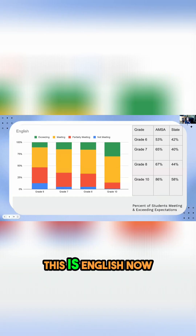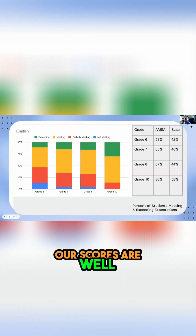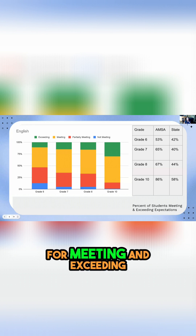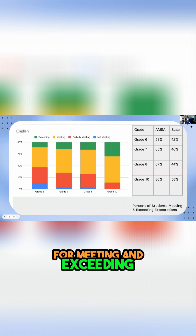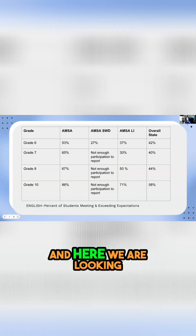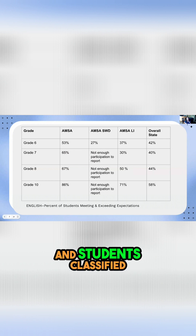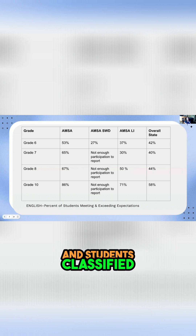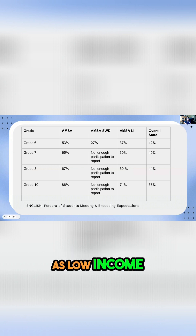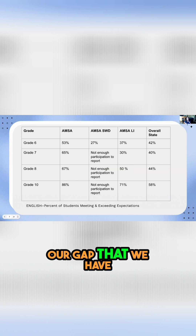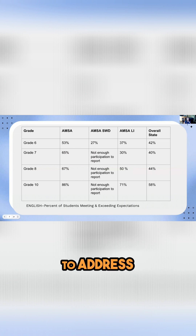This is English now. Again, our scores are well above the state level for meeting and exceeding. And here we are looking at students with disabilities and students classified as low-income, and we see our gap that we have to address.